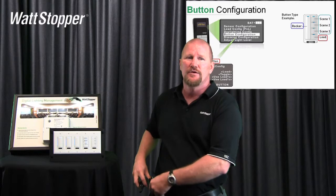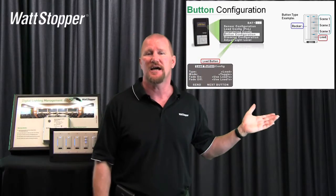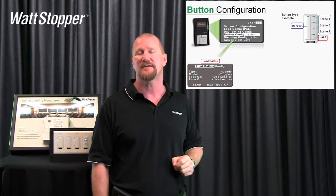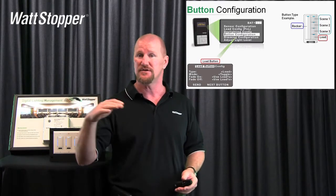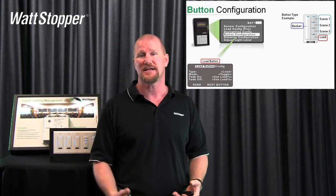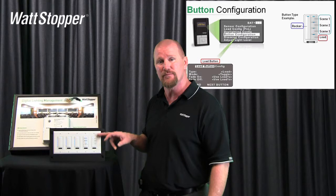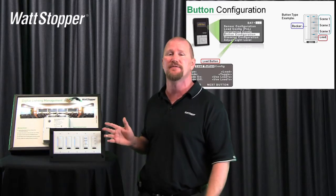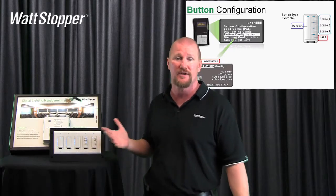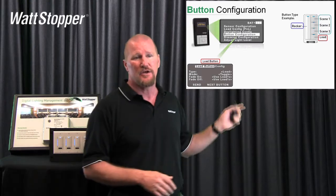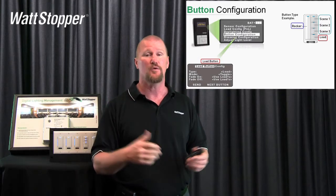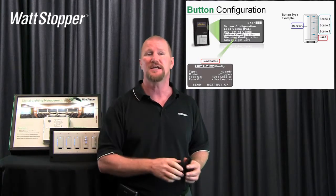If I hit a load button, I have the ability to change the type — I can make it a load button or a scene button. If I arrow right or left on that field, the selections are scene one through scene 16. Every DLM room has up to 16 scenes you can access. Each scene switch has four scene buttons, so you can access any four scenes you want — they don't have to be in order, it's not scene banks. You can also change the mode. By default, a load button is toggle action — press on, press off. If you want it to be on-only or off-only, you can change it right here. We also have separate fade on and fade off times, defaulting to two seconds.